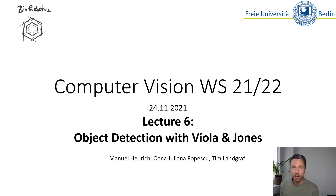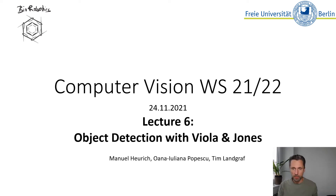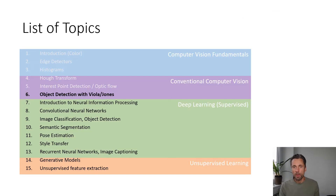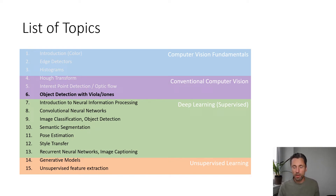Welcome everyone. This is lecture number six. Today I'm going to present object detection with the algorithm proposed by Viola and Jones. This is the sixth and last lecture of the conventional computer vision block before we then transition into neural information processing.